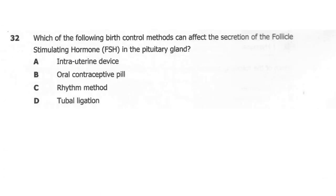Question 32. Which of the following birth control methods can affect the secretion of follicle-stimulating hormone (FSH) in the pituitary gland? A: intrauterine device. B: oral contraceptive pill. C: rhythm method. D: tubal ligation. The correct answer here is B. Oral contraceptive pills contain artificial progesterone which works as a negative feedback, preventing the secretion of follicle-stimulating hormone. That is how contraceptive pills work.